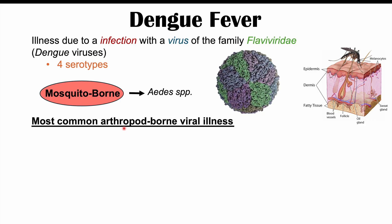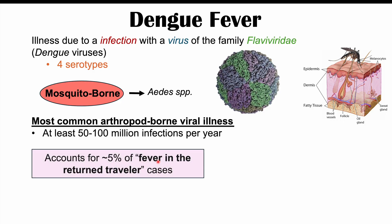This is actually the most common arthropod-borne viral illness in the world. It's been estimated that at least 50 to 100 million infections of dengue fever occur per year worldwide, and some estimates have up to almost 400 million. So this is a very common illness.